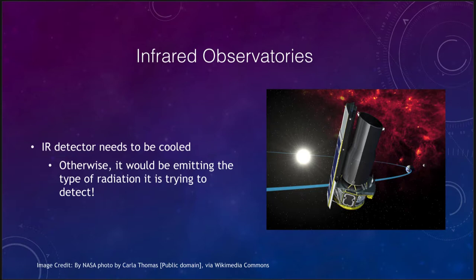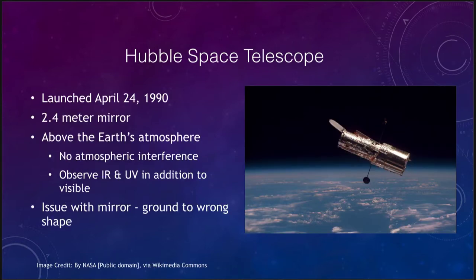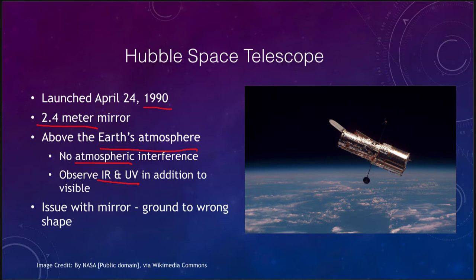One of the most famous space telescopes is the Hubble Space Telescope, which was launched in 1990 and has a 2.4 meter mirror — a very small mirror compared to many optical telescopes here on Earth. The key is that it is above the atmosphere of the Earth, so we get no atmospheric interference. That means we can get higher resolution images with no atmospheric blurring from the twinkling of the stars. It can also observe infrared and ultraviolet, so it is not constrained to just visible light, since a regular mirror will reflect infrared and ultraviolet light as well.